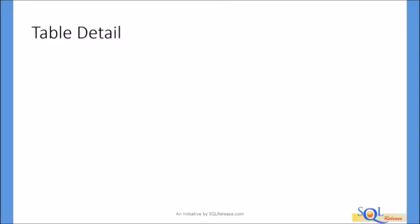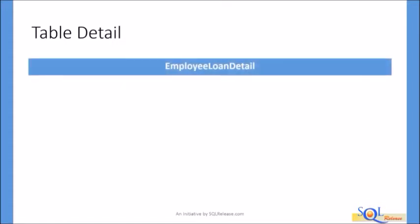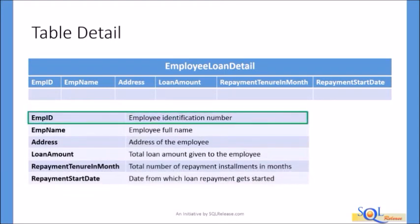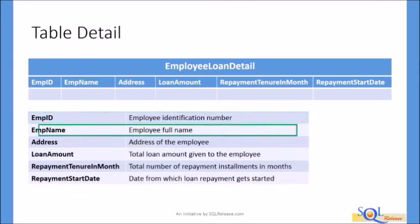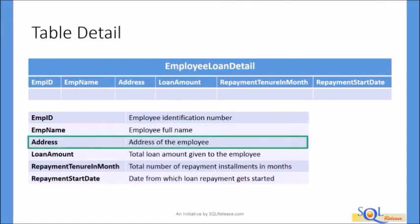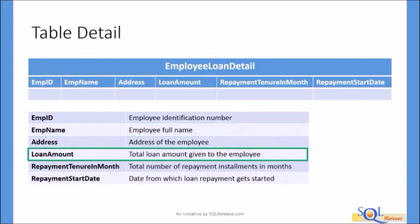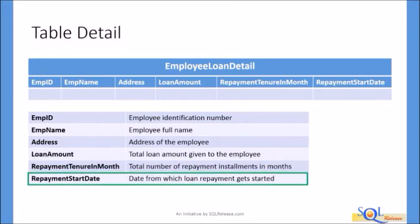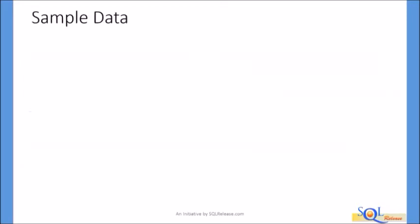Suppose company SQL Release provides employee-friendly loans to its employees with simple repayment options. The loan detail data is stored in a table named Employee Loan Detail, which has columns EMP ID, EMP Name, Address, Loan Amount, Repayment Tenure in Month, and Repayment Start Date. EMP ID stores the Employee Unique Identification Number, EMP Name stores the employee name, Address stores the address of the employee, Loan Amount is the total loan amount given to the employee, Repayment Tenure in Month is the total number of repayment installments in months, and Repayment Start Date stores the date from which loan repayment will start. We also have a few sample records in this table.